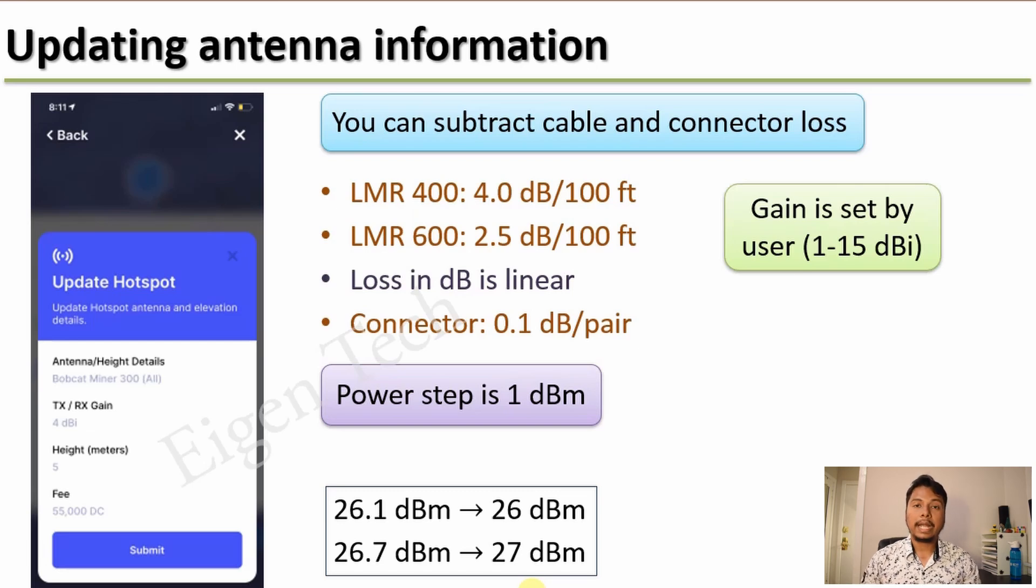Helium doesn't know what antenna you are going to use. You are responsible for setting the gain using the Helium app, and the number will be in between 1 and 15 dBi with steps of 1 dBi. Now the question is, can you falsify this information? Because you have the freedom, can you do that? So actually you can, but there could be a negative impact. So let us see what will happen if you use incorrect parameters while updating the antenna information.